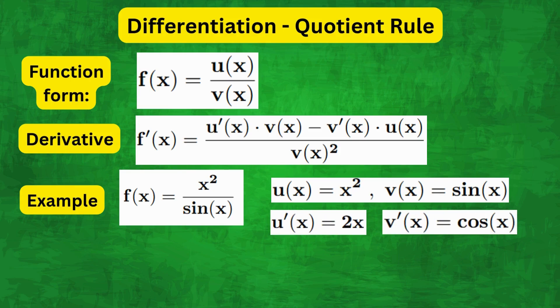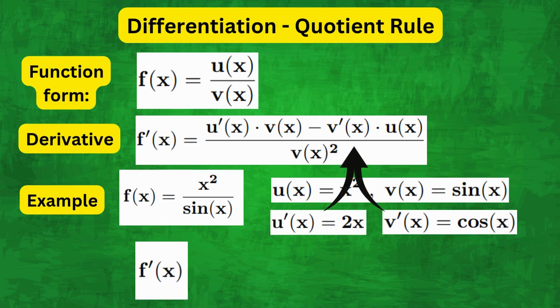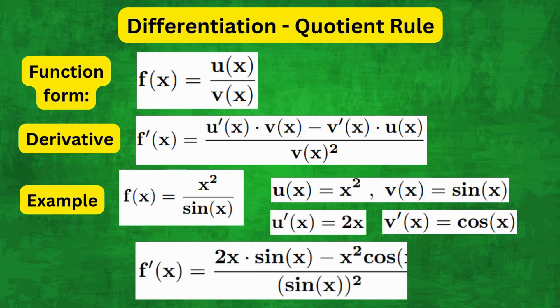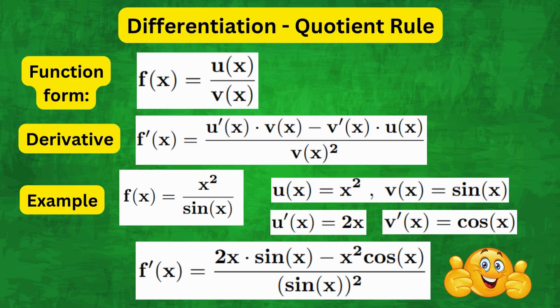And therefore, plugging in the expressions into the quotient rule, we get (2x·sin(x) - cos(x)·x²)/sin²(x), and this of course is the same answer as what we got with the product rule, but slightly easier. Hope you enjoyed the video, thank you for watching, and see you next time. Bye bye!